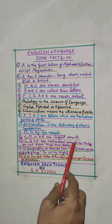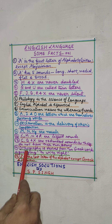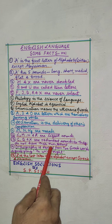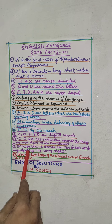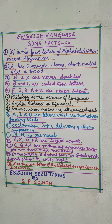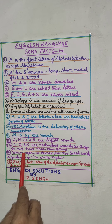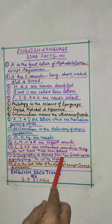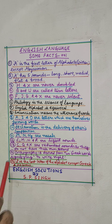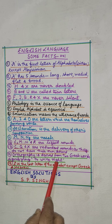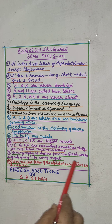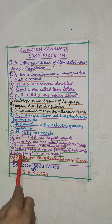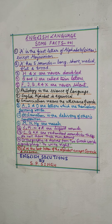Orthography is derived from two Greek words signifying to write. And the last point is that Z is the last letter of the alphabet except in Greek and Hebrew — in these two languages, Z is not the last letter.